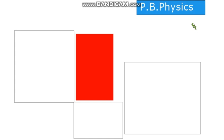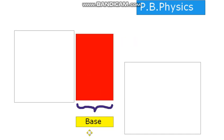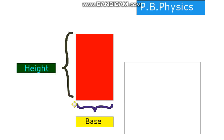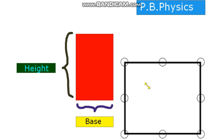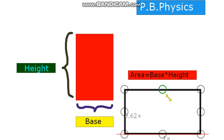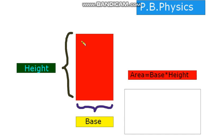In math class it is taught that the area of a triangle is half times base times height, but why is this so? Let's look — here we have a rectangle. We name this length as base and we name this length as height, so the area of this rectangle is base times height.